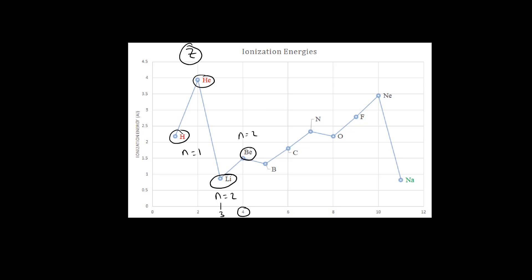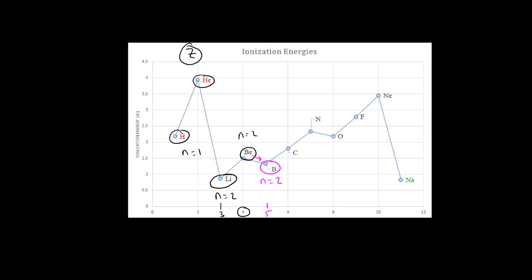But note here, going from beryllium to boron, we actually go downhill. The ionization energy decreases going from beryllium to boron, and that's unexpected. We're still in the second shell, and boron has five protons, whereas beryllium has four. So there must be something else happening here that makes boron have a lower ionization energy, easier to remove an electron than beryllium.